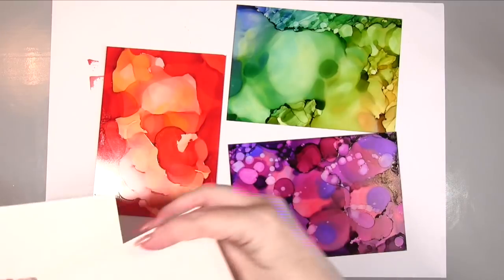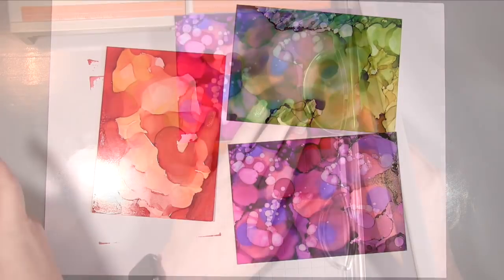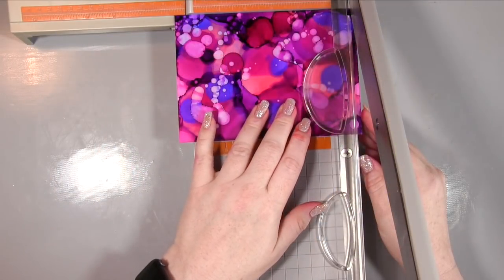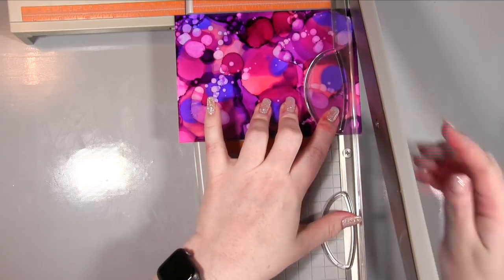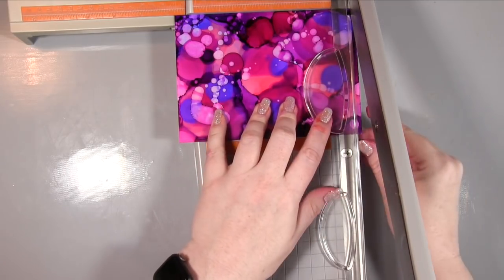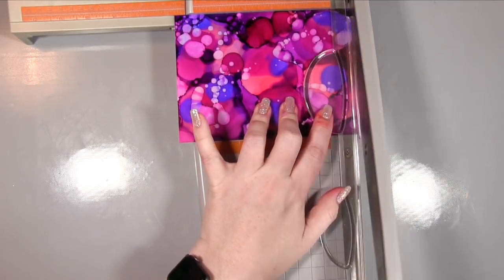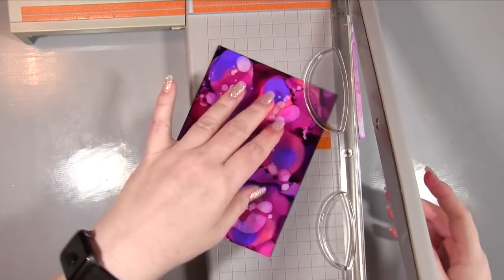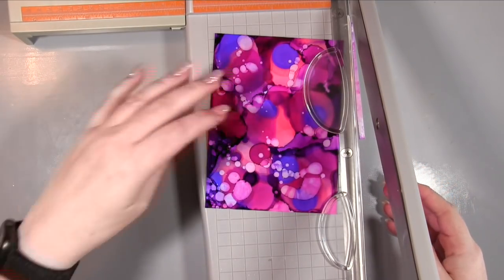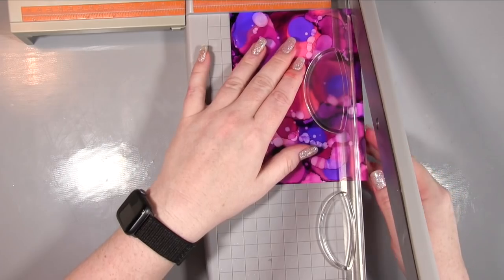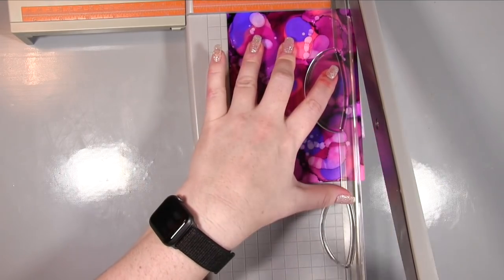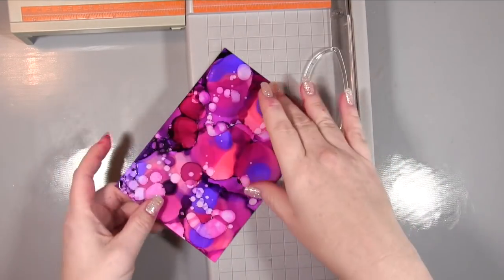These Yupo papers are five by seven so I've created some five by seven white card bases. Then I've taken the backgrounds and cut a quarter inch off the short side and one quarter inch off one long side.